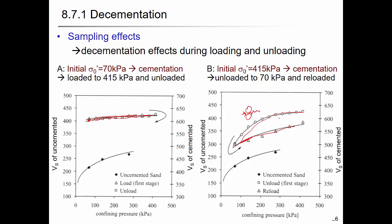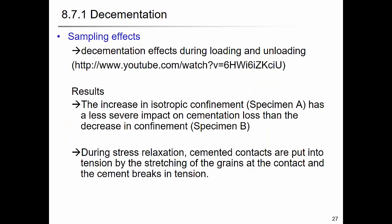We can use this concept to think about the sampling effect: when you take out a sample from the ground using a Shelby tube, the soil was under very large stress. Releasing all the overburden and lateral stress causes the sample to expand, which means you lose some aging and cementation effect in the specimen.